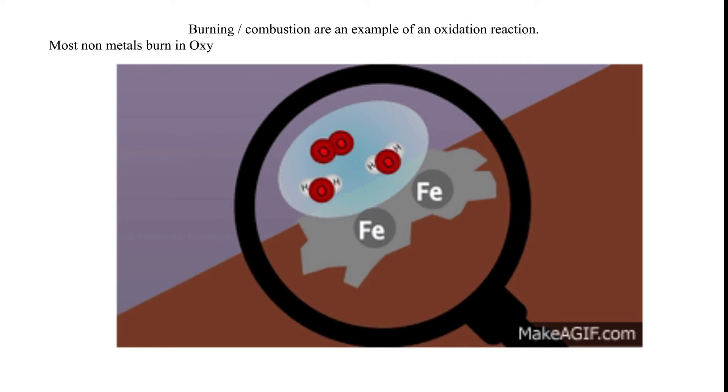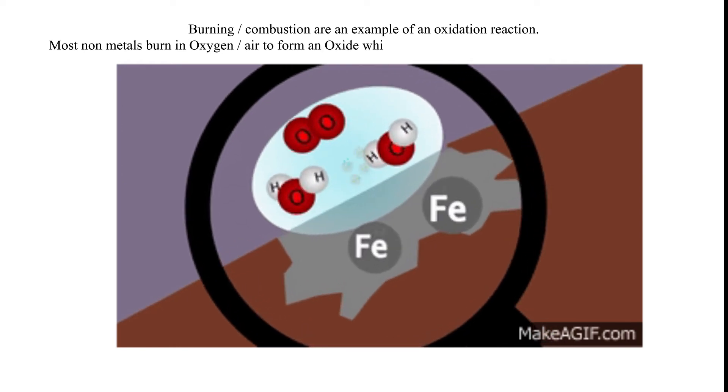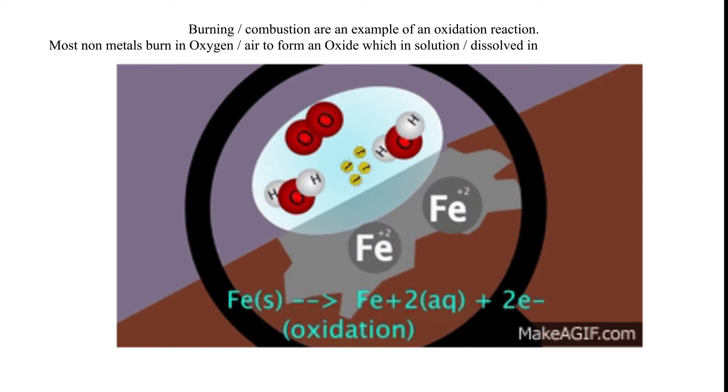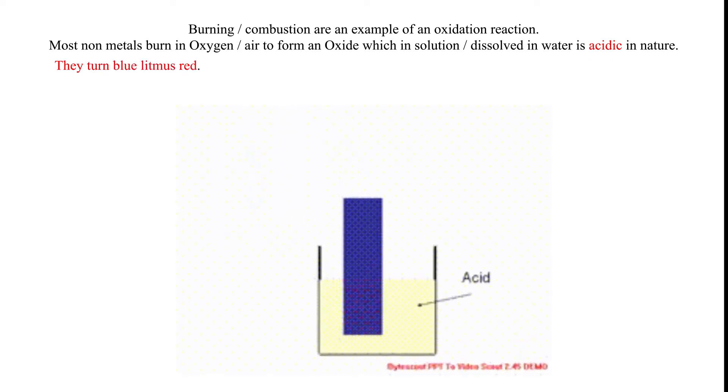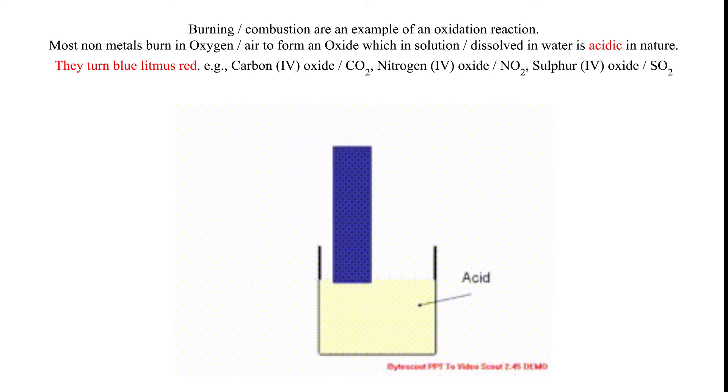Most non-metals burn in oxygen or air to form an oxide which, in solution or dissolved in water, is acidic in nature. They turn blue litmus red. Examples include carbon oxide, nitrogen oxide, and sulfur oxide.